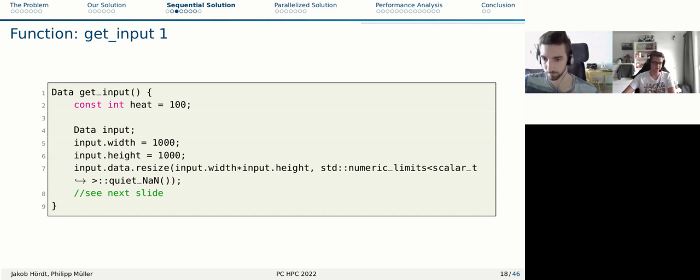Our first function is our input function. First of all, there's a heat here set. In this example, it's 100. It could also be some other thing like electric potential or something, depending on the scenario you're using. We have the input width and the input height. We are initializing a field with NAN values. It's important to say that for our purpose, we hardcoded the input, but one could also imagine to take a file or something and get the input data from that.